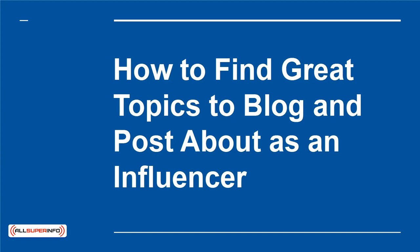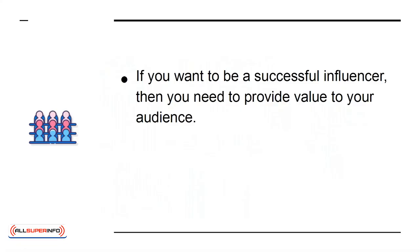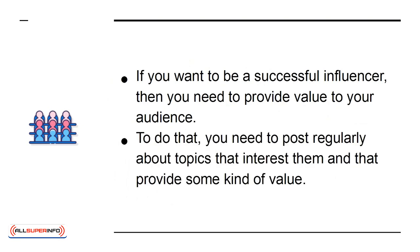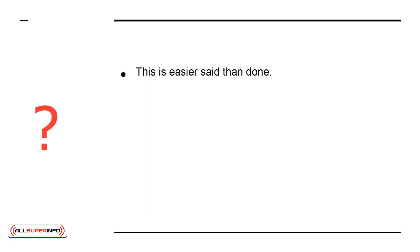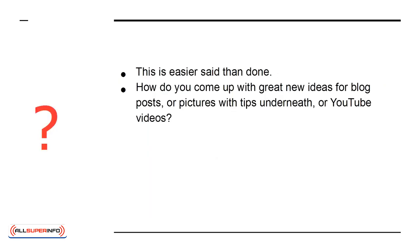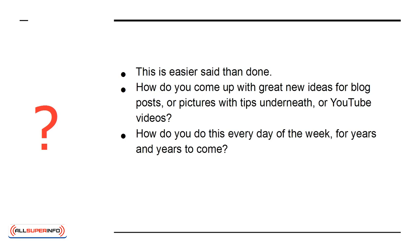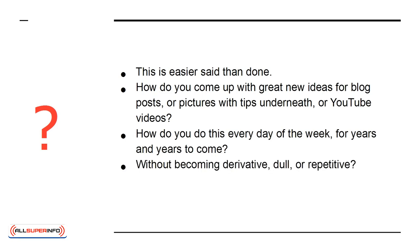How to find great topics to blog and post about as an influencer. If you want to be a successful influencer, then you need to provide value to your audience. To do that, you need to post regularly about topics that interest them and that provide some kind of value. This is easier said than done. How do you come up with great new ideas for blog posts, pictures with tips underneath, or YouTube videos — every day of the week, for years and years to come, without becoming derivative, dull, or repetitive? Here are some tips that can help.